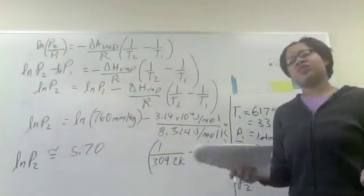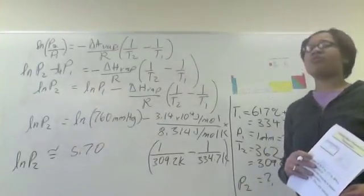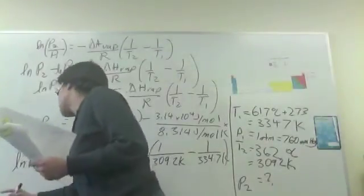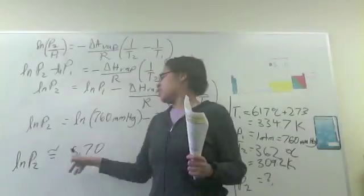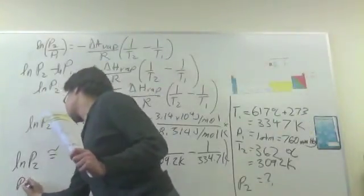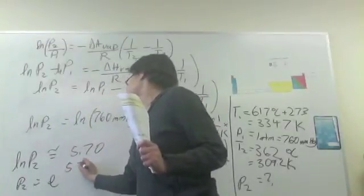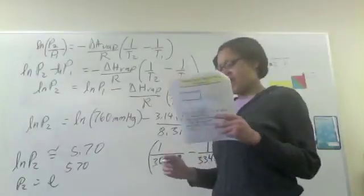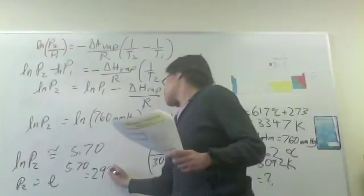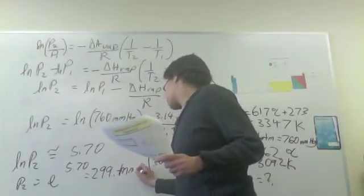And another thing you might remember from math class is if you want to undo a natural logarithm, you need to raise E to whatever number you have here for the value for your natural logarithm. So P2 will be equal to E to the 5.70, and that should give you around 299 torr or millimeters of mercury.